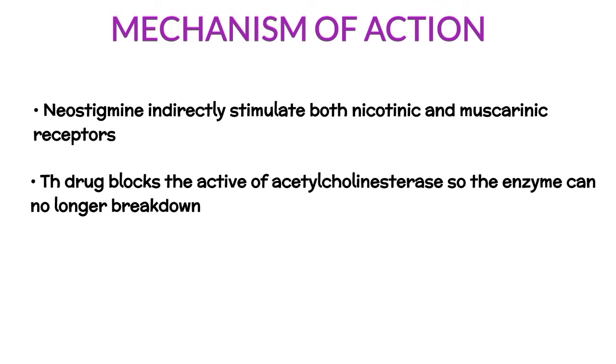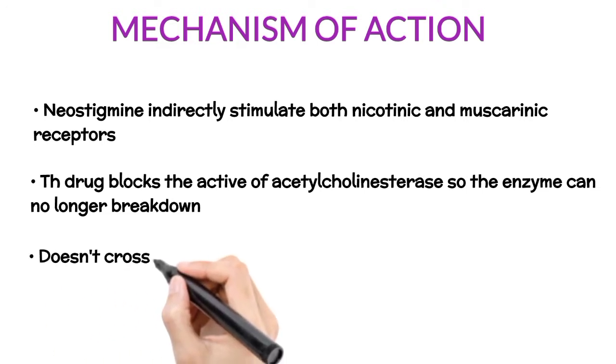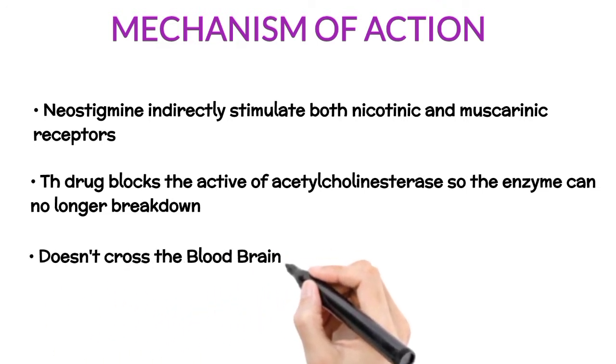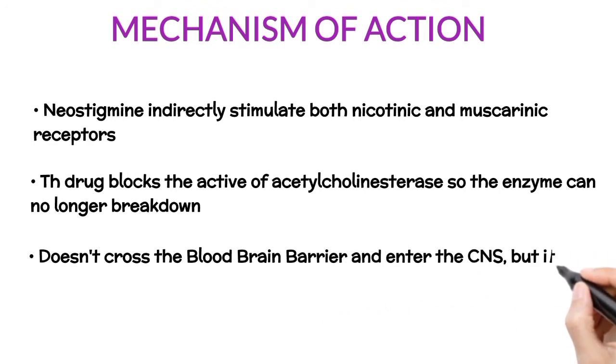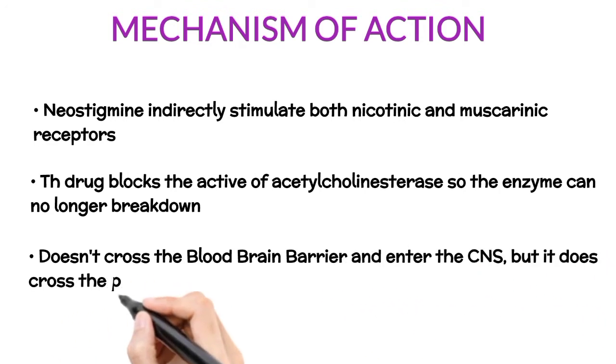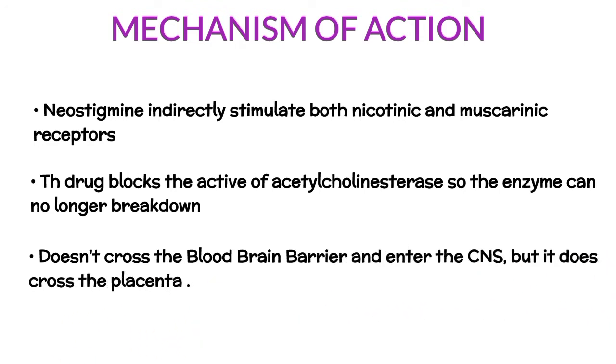Unlike physostigmine, neostigmine has a quaternary nitrogen; hence, it is more polar and does not cross the blood-brain barrier and enter the CNS, but it does cross the placenta.